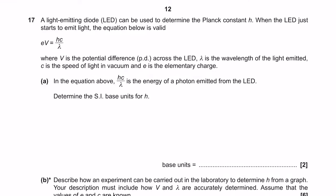Question 17: a light-emitting diode can be used to determine the Planck constant H. When the LED just starts to emit light, the equation EV equals HC over λ is valid — where V is the potential difference, λ is the wavelength of emitted light, C is the speed of light, and E is the elementary charge. For part A, we determine the SI base units for H using the equation.